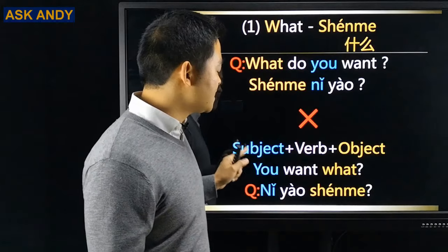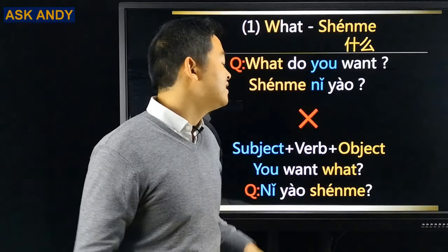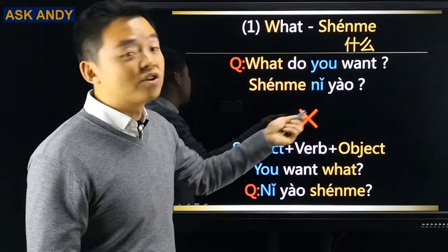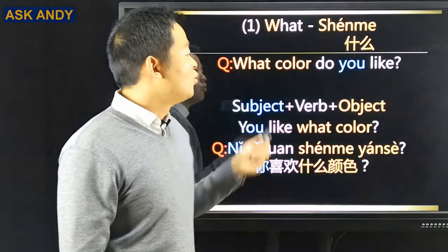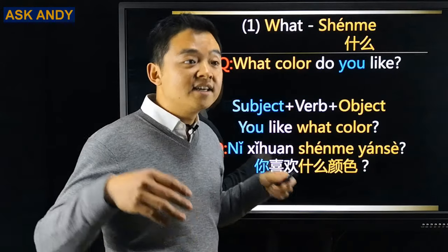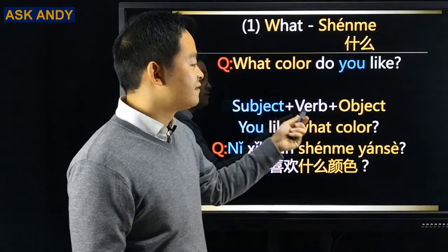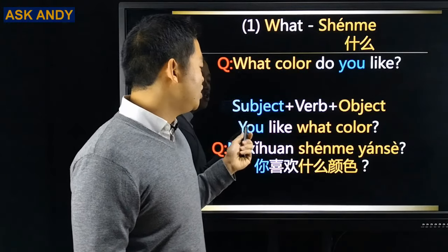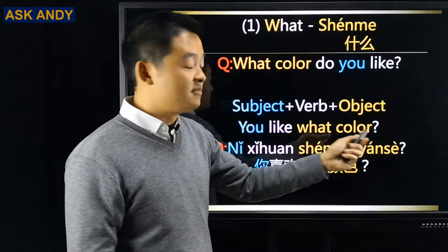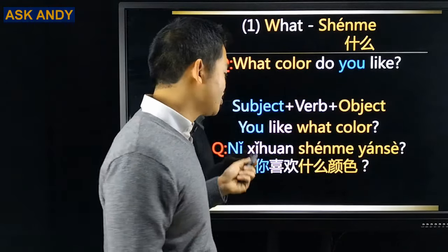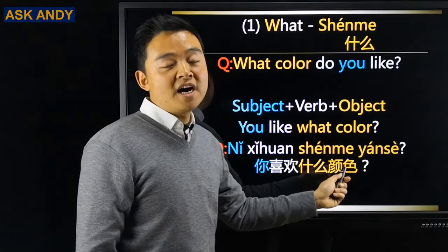We follow the Subject-Verb-Object pattern for WH-questions in Chinese — English word order doesn't work. Another example: 'What color do you like?' Rearrange to 'you like what color?' Then translate: 你喜欢什么颜色?